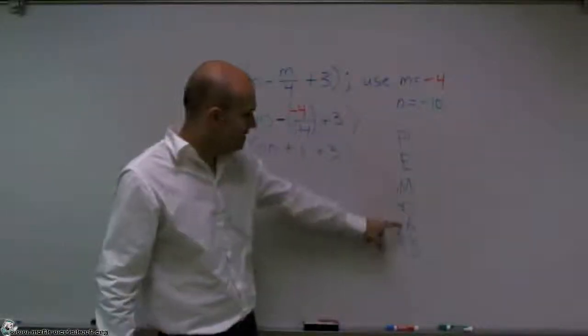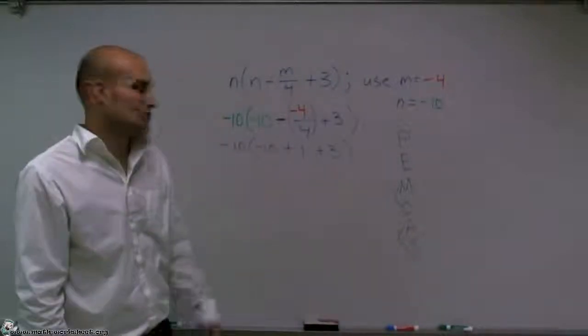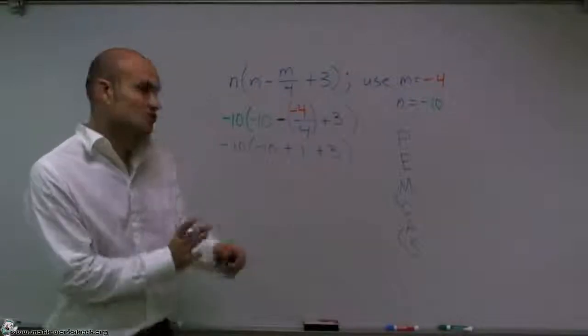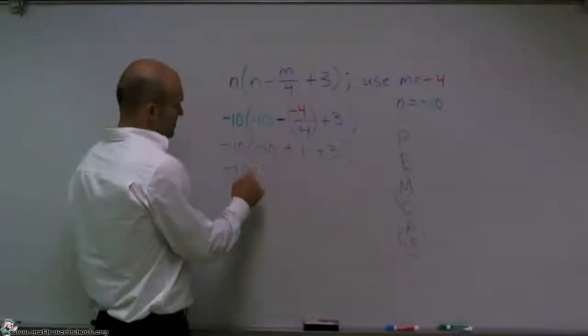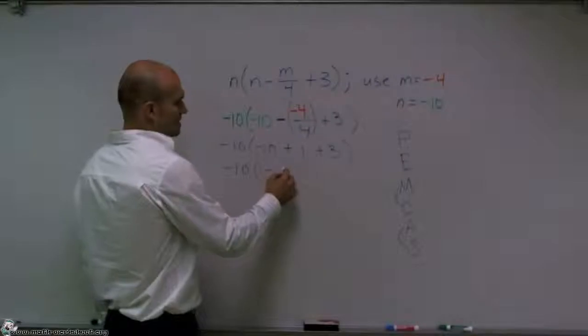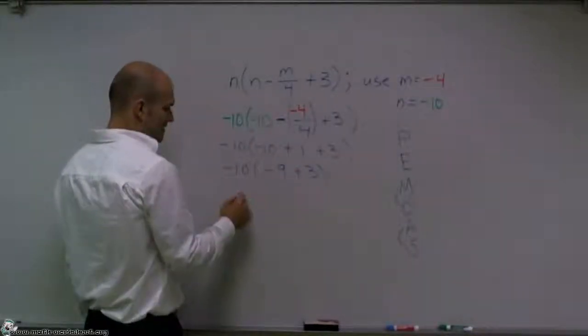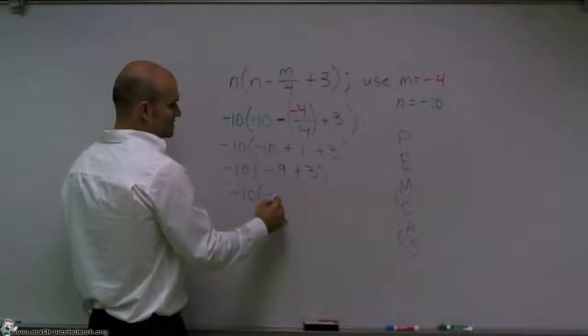Then the next thing I look at inside the parentheses, is there any addition or subtraction that I can do? Well, yeah. There's actually two of them. Well, I need to make sure I do it from left to right. So now negative 10 plus 1 is going to give me a negative 9 plus 3. Then I can complete this set and that's going to give me a negative 6.